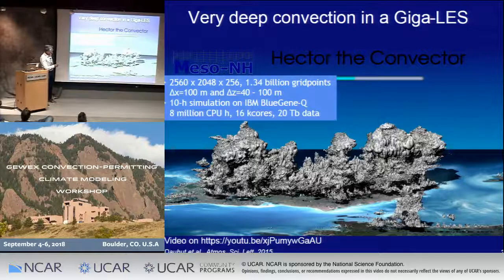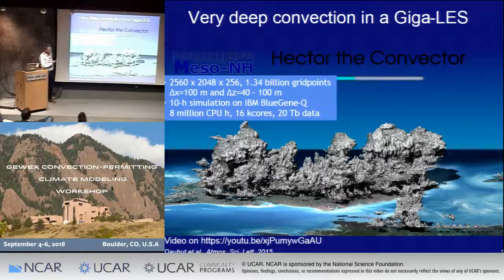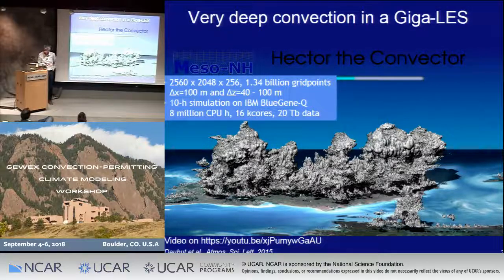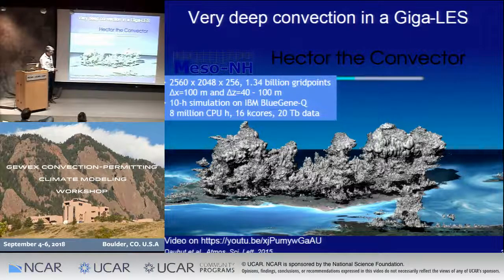This giga LES is 'giga' because it's run with more than one billion grid points, with a grid mesh of about 2,500 by 2,000 with 256 vertical levels — a grid mesh of 100 meters in both the horizontal and vertical. It's a 10-hour simulation run on IBM BlueGene/Q: 8 million CPU hours, 16 kilocores, 20 terabytes of data. An animation is also available on YouTube.